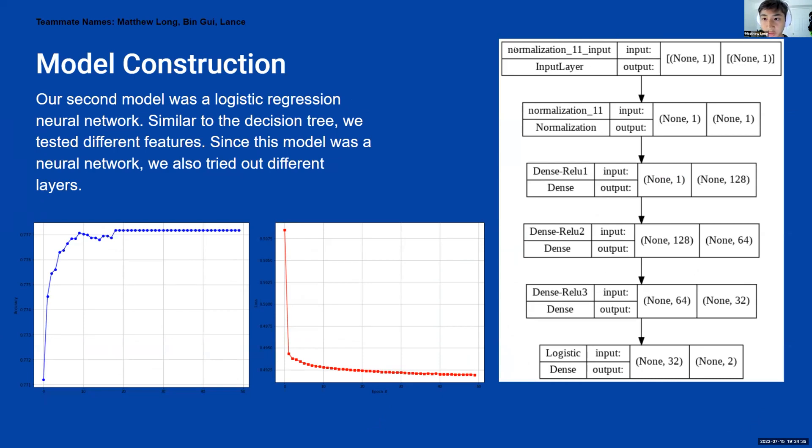So first, we normalized the input, and then after that we had three dense layers. We played around with different dense layers, but we found that the dense layers actually didn't have too big of an impact on the results. And we found that having three dense layers actually provided pretty solid results in terms of accuracy.